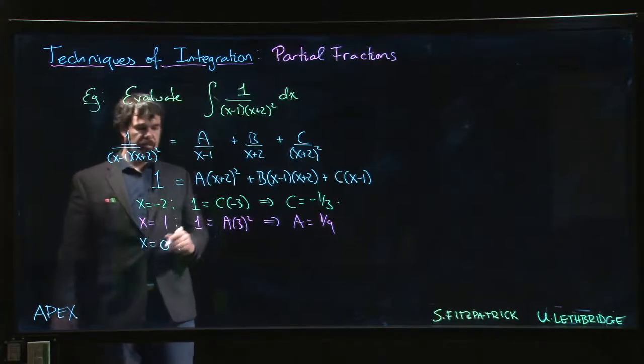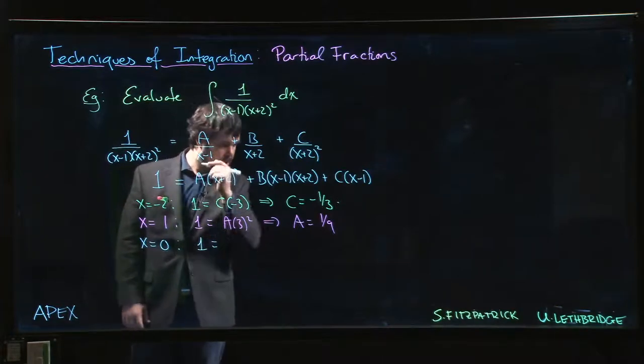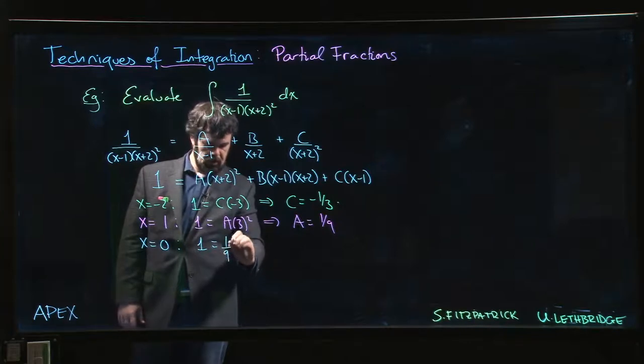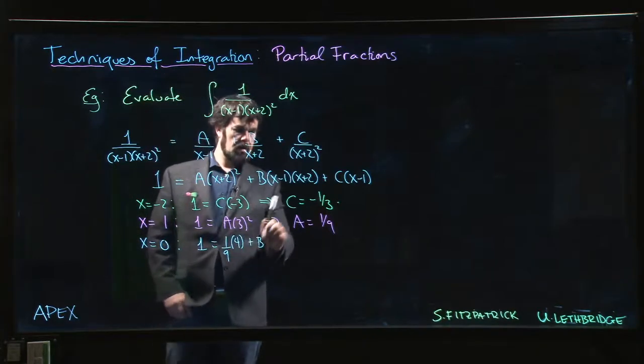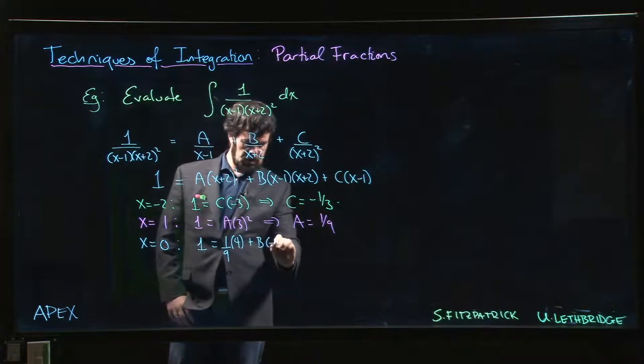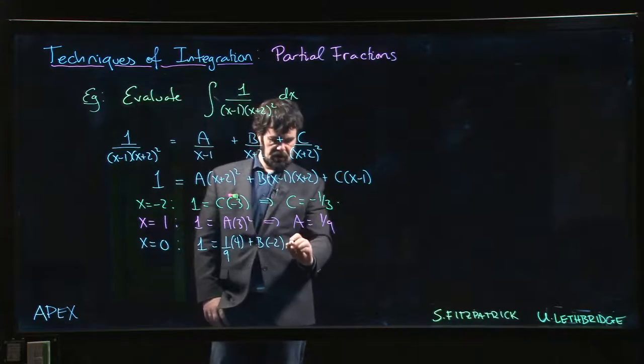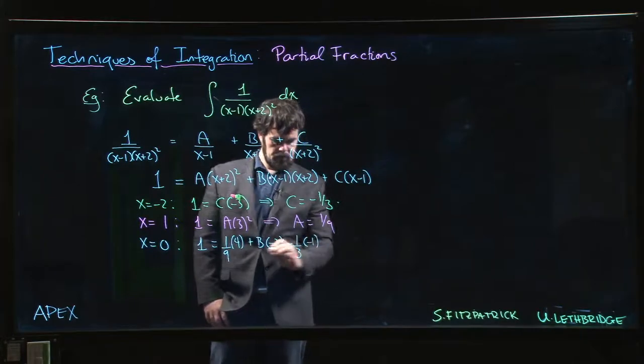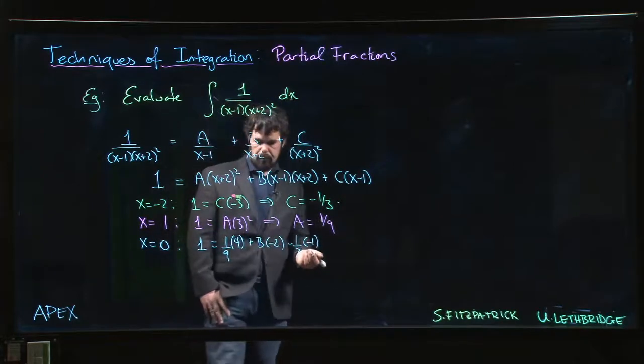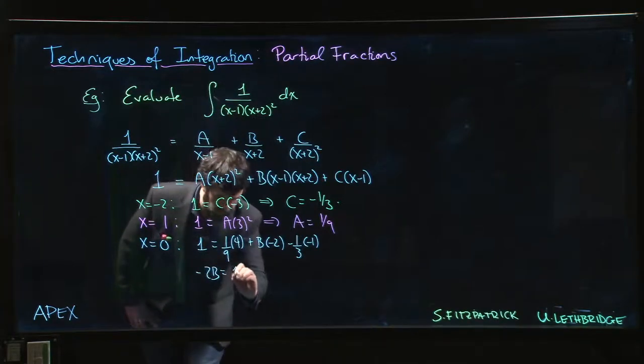So we pick some other number, and typically you want to choose something that's easy. Zero is typically easy to plug in. So if we plug in x equals zero, I get 1 is equal to, well A which is 1 over 9 times 2 squared which is 4, plus B times, so that's going to be 2B times minus 2, and then we have C is minus 1/3 times, so put in 0 I get minus 1. Okay, so I get minus 2B is equal to 1.